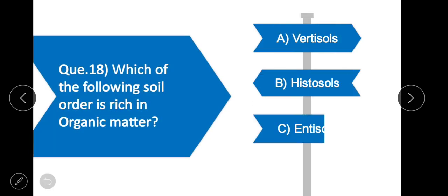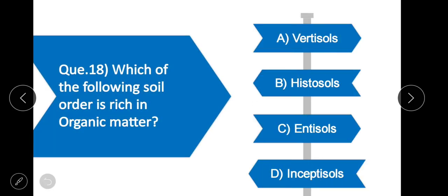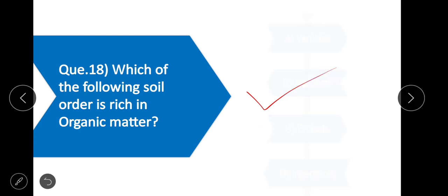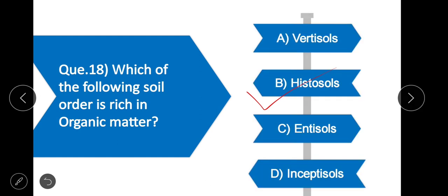Question 18: Which soil order is rich in organic matter? Option B is correct — Histosols. Histosols are soils rich in organic matter.